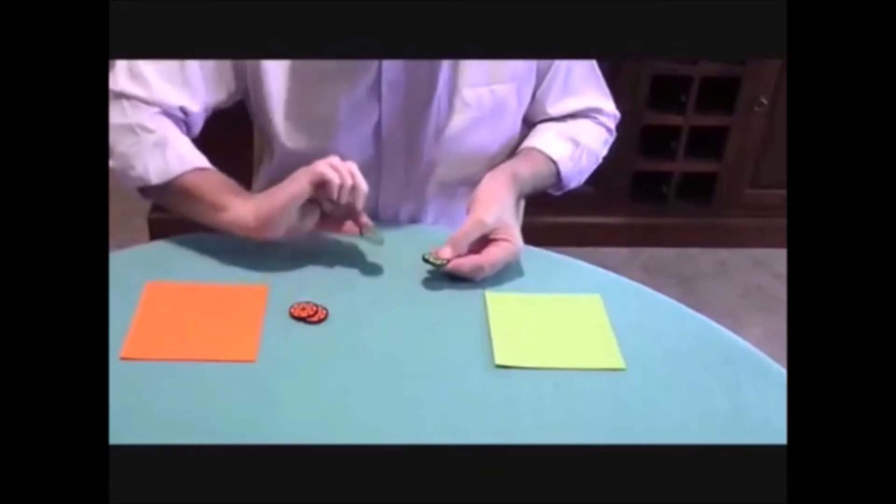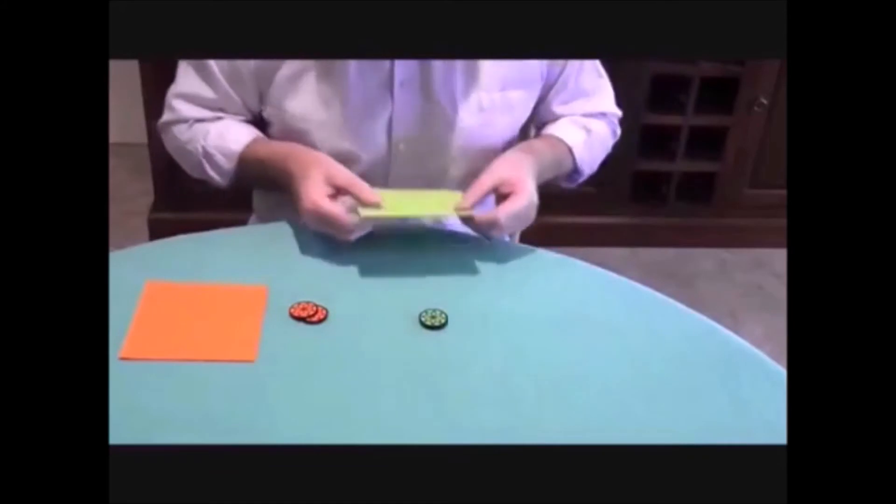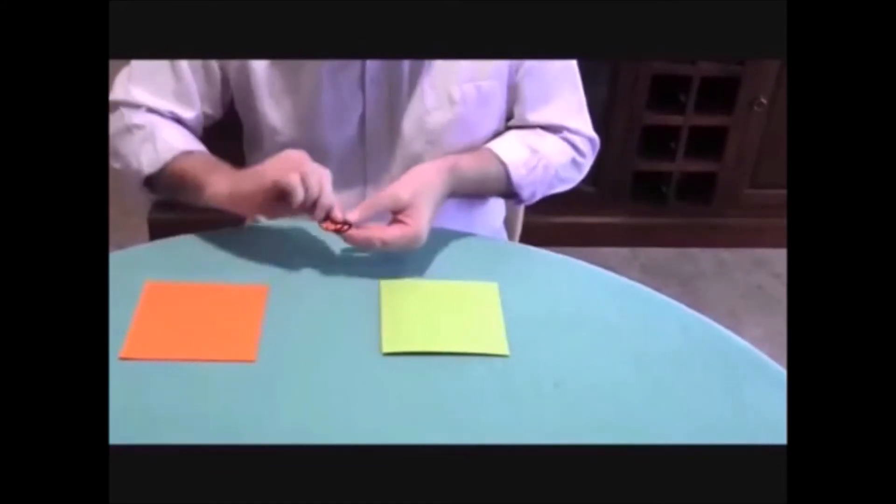So let's do something with those. We'll take the two green poker chips first of all and cover them with the green sheet. So green is under green.